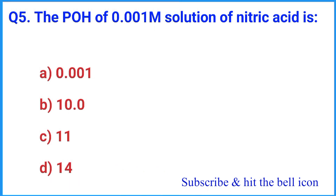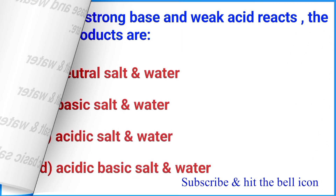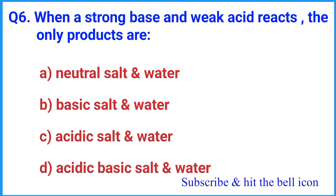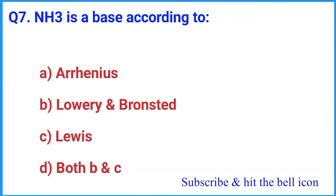Question number 5: The pH of a 0.001 mol solution of nitric acid is — the right answer is option C: 3. Question number 6: When a strong base and weak acid react, the only products are — the correct answer is option B: basic salt and water.